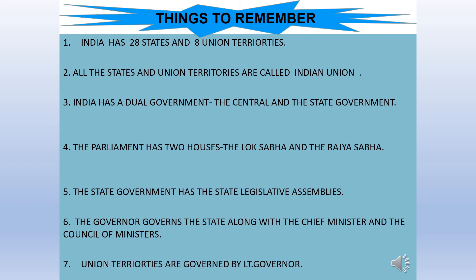Let us summarize what we have studied. India has 28 states and 8 union territories. All the states and union territories together are called the Indian Union. India has a dual government — the central and the state government. The Parliament has 2 houses: the Lok Sabha and the Rajya Sabha. The State Government has State Legislative Assemblies. The Governor governs the state along with the Chief Minister and the Council of Ministers. Union territories are governed by a Lieutenant Governor. Happy Learning!